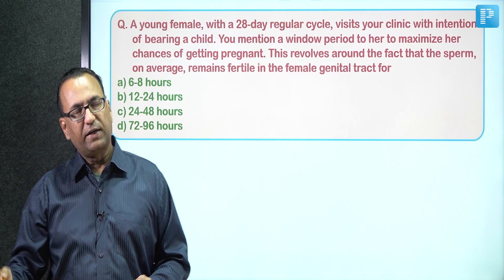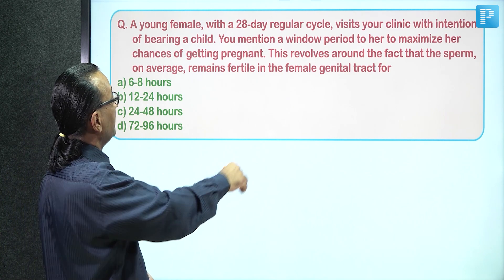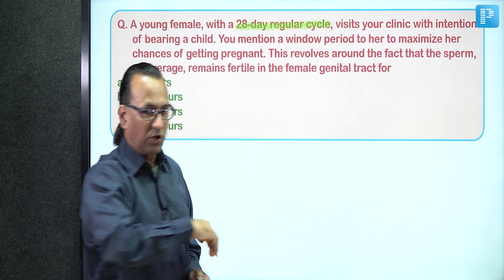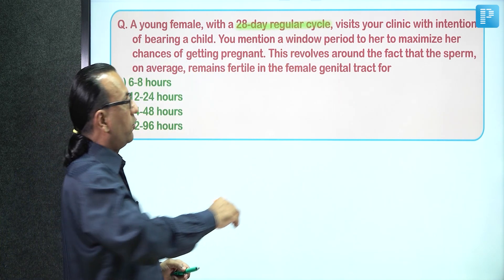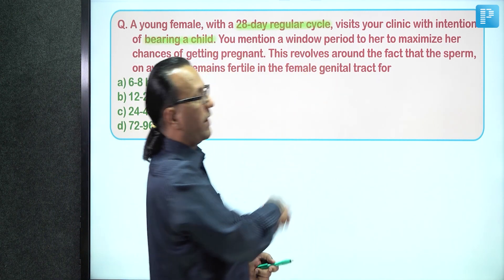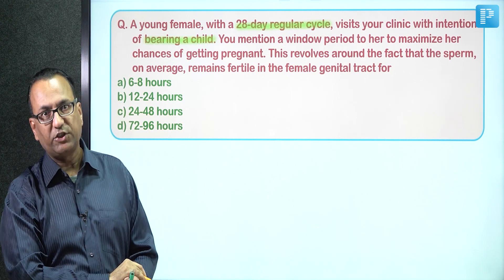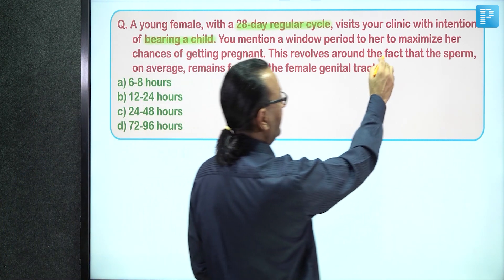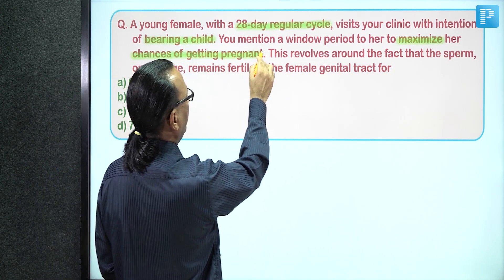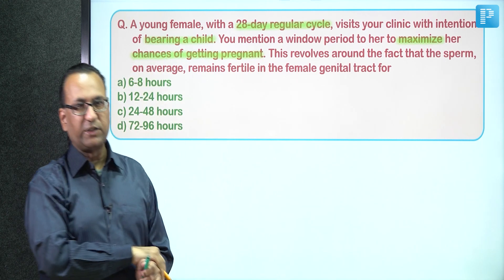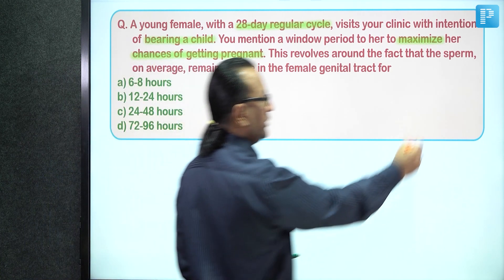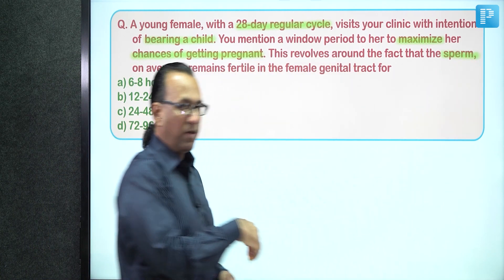We have a case of a lady with a regular cycle of 28 days who intends to conceive. We need to tell her about the most fertile period during which she should undergo copulation to have maximum chance of fertilization. This advice depends on calculations regarding the survival of the oocyte and its capability to get fertilized, and also about the sperm.